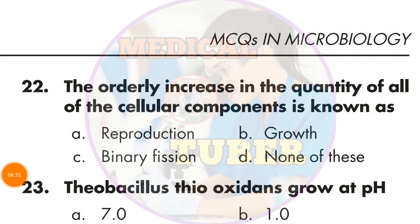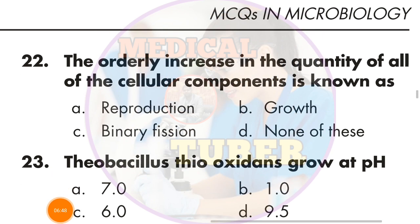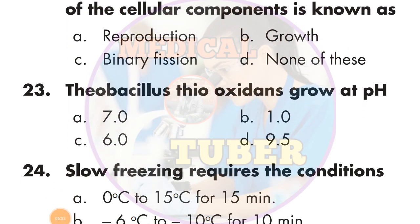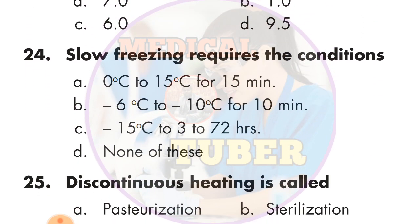Question number 22: The orderly increase in the quantity of all cellular components is known as — the answer is B — growth. Next question: Haemophilus tube bacillus oxidants grow at pH — the answer is B — 1.0.